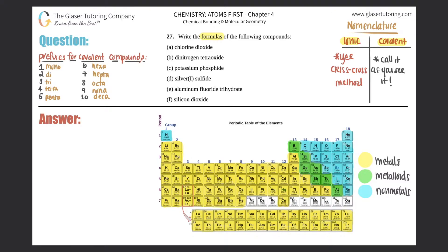Number 27: write the formulas of the following compounds. We're almost halfway done with the nomenclature. If you need more practice, you can see the questions beforehand, and there are tons more questions afterwards. Now let's get into it. Remember, any time you need to write a compound formula, you always need to know whether it's going to be an ionic compound or covalent.